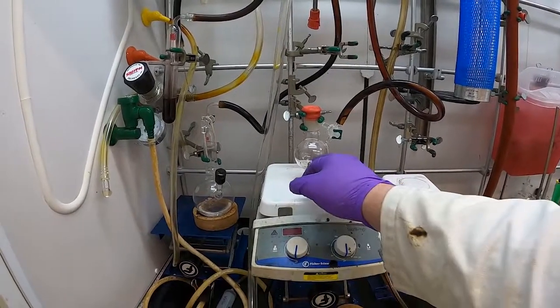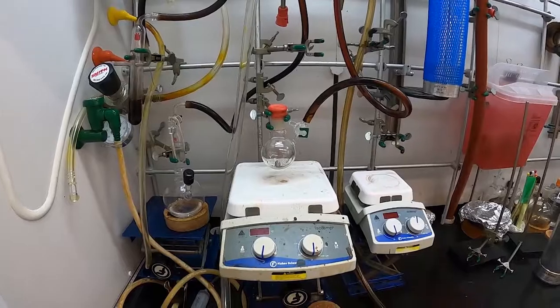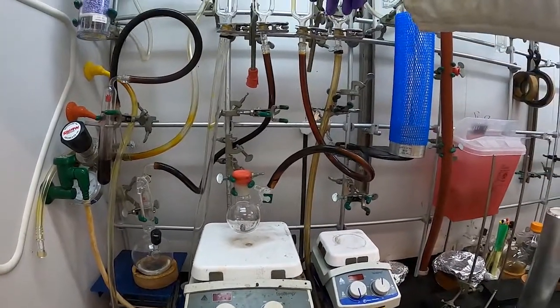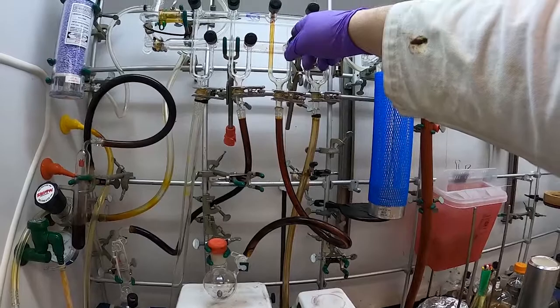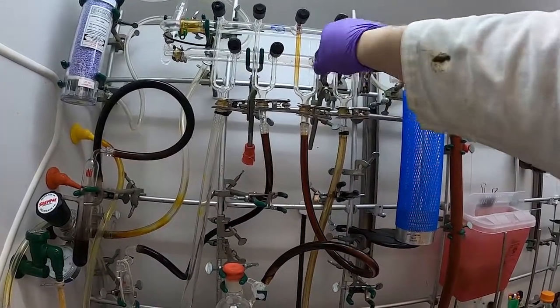The first thing we need to do is evacuate the inside of the flask, so that we can then refill it with our inert gas. So the first thing we need to do is open up our vacuum port here. So I have this connected to this port here. This is the vacuum port.